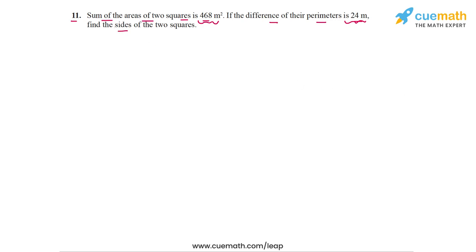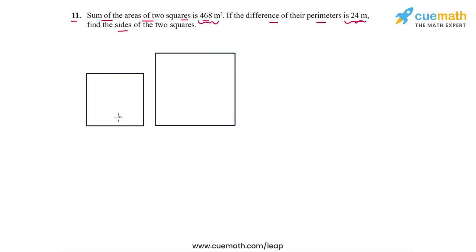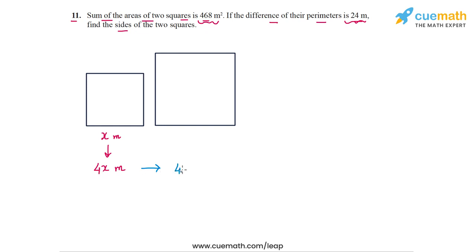Let's draw a simple visual to help us represent this situation. Suppose these are the two squares being talked about in the problem statement. Let's say the smaller square has a side length of x meters, so it will have a perimeter of 4x meters, because the perimeter of a square is the sum of its four equal sides. This means the perimeter of the larger square will be 24 meters more, so 4x plus 24 meters.